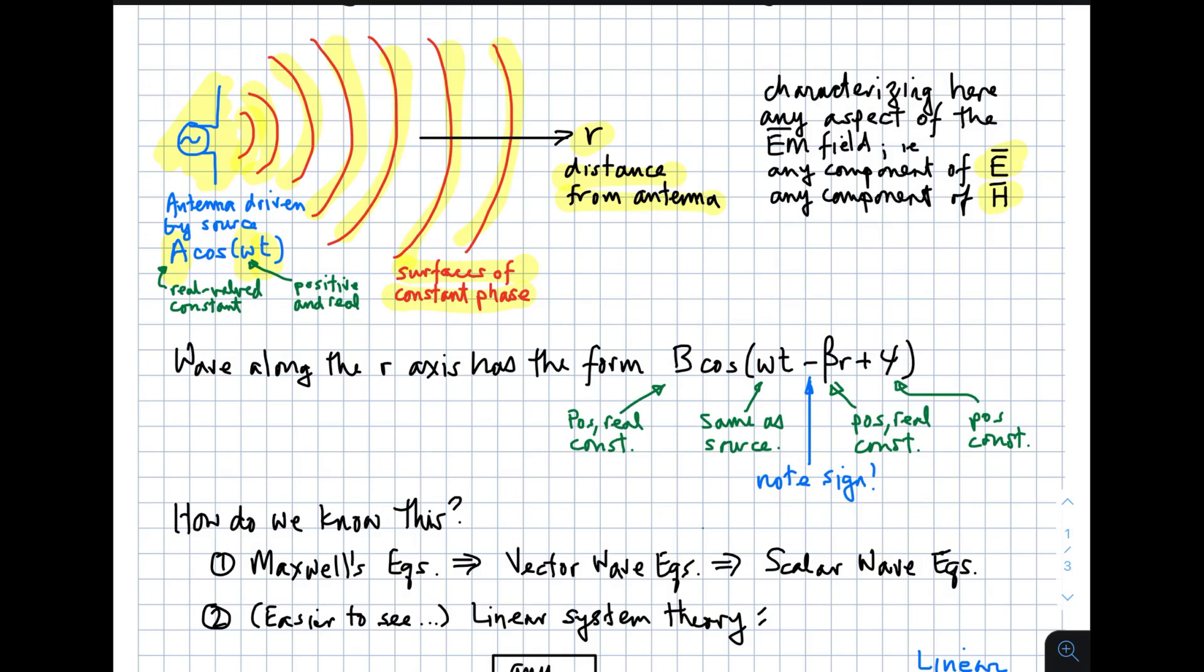The key idea here is that there is an input, which is this thing A cosine omega t, and there is an output, which is the wave. And the wave is being measured as a function of distance and time.